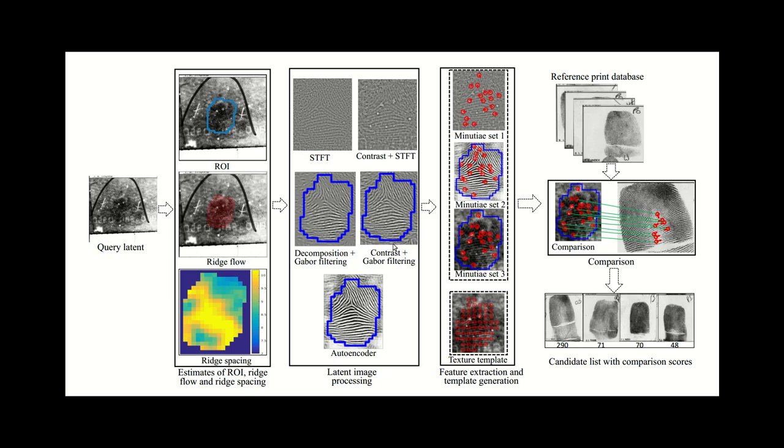These methods all look fairly similar to a human based on the grayscale images you see here, but through research we determined that they're all actually important and all provide complementary information. In fact, in the final step, we generate three minutiae sets which are also complementary, and those are directly analogous to the different image enhancement techniques that I mentioned before in step two.